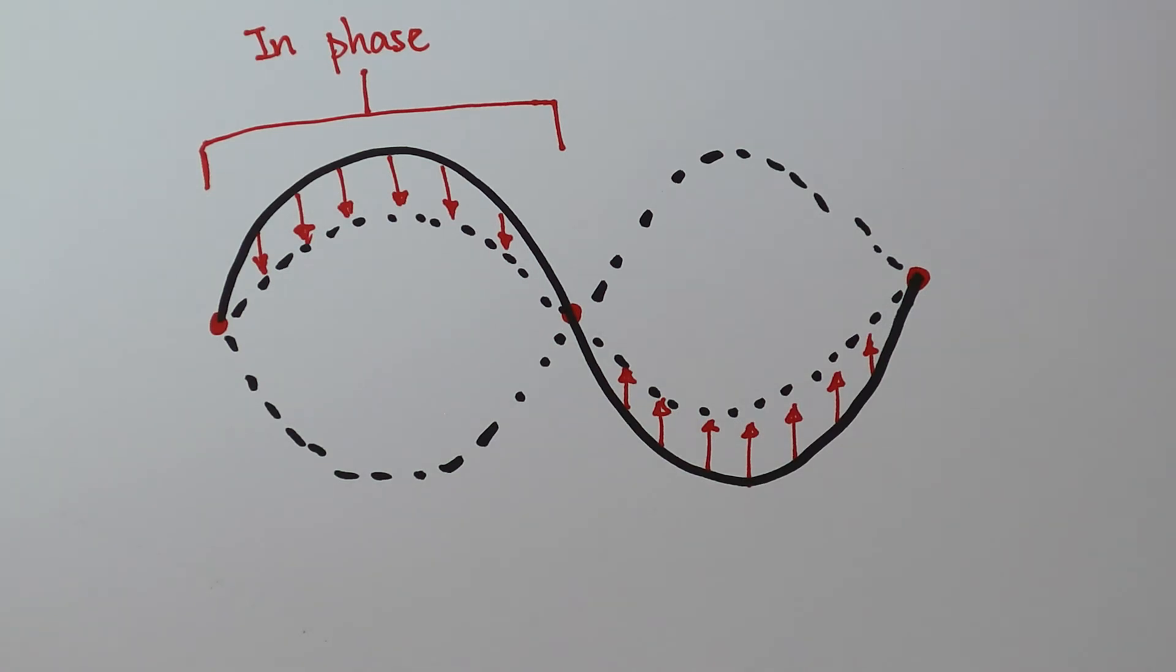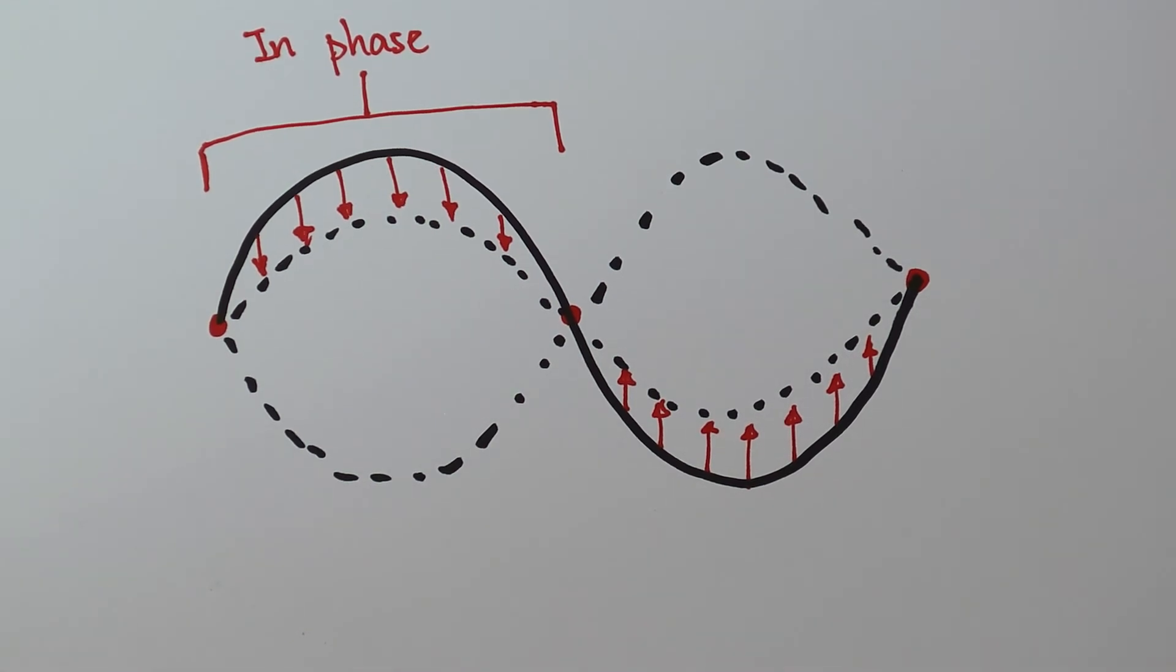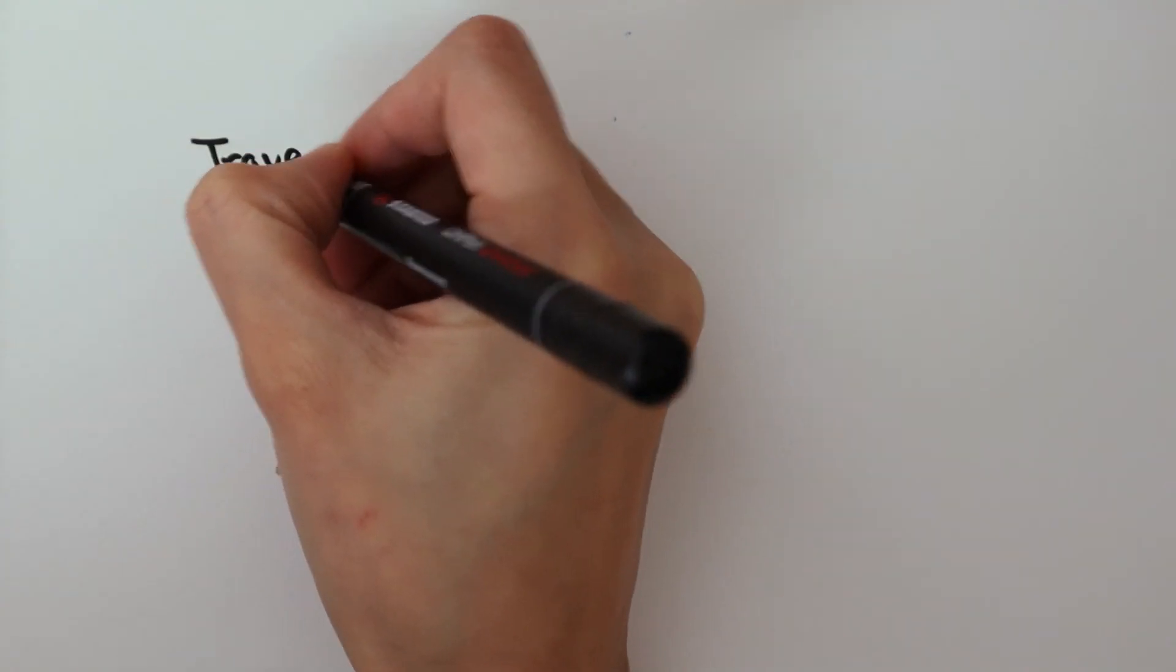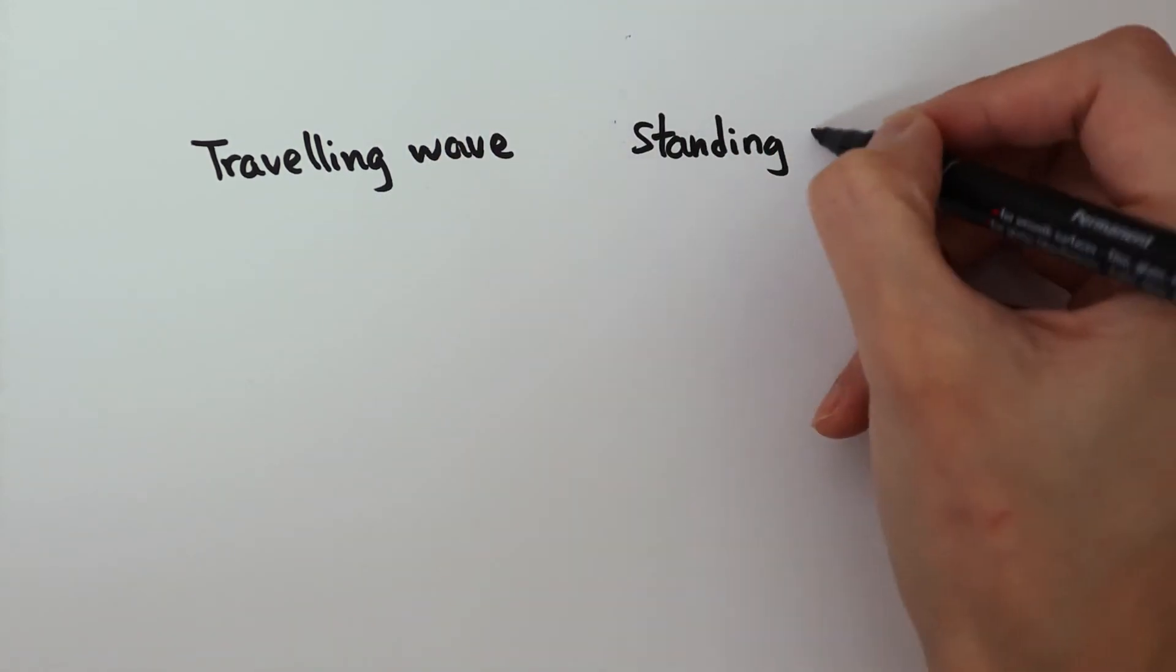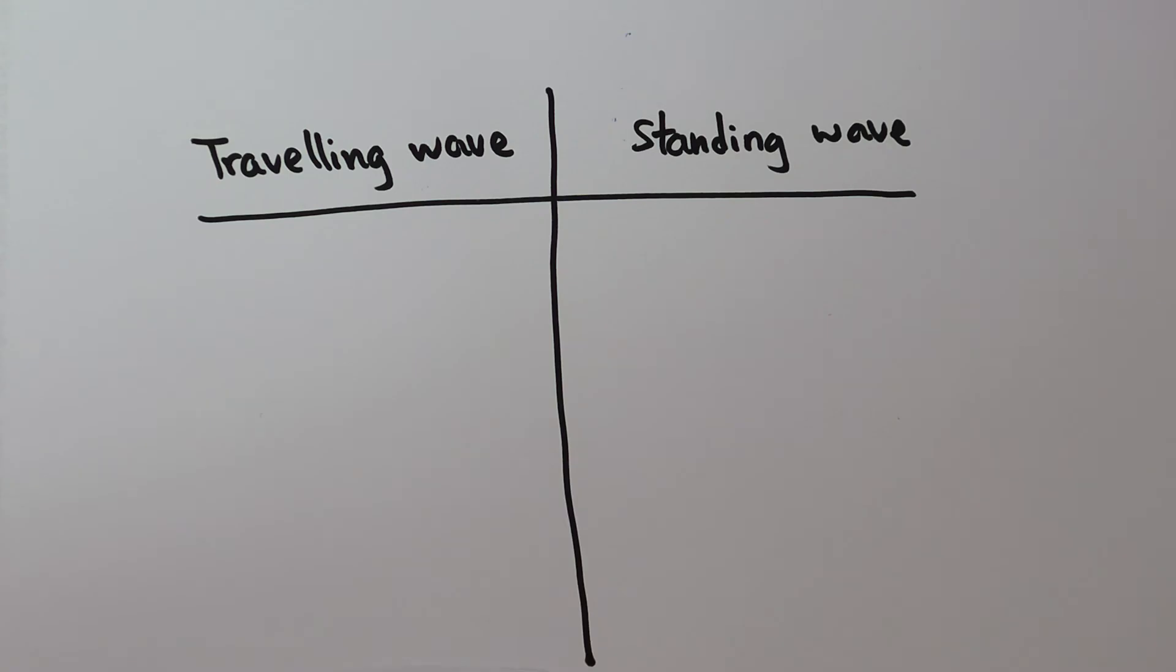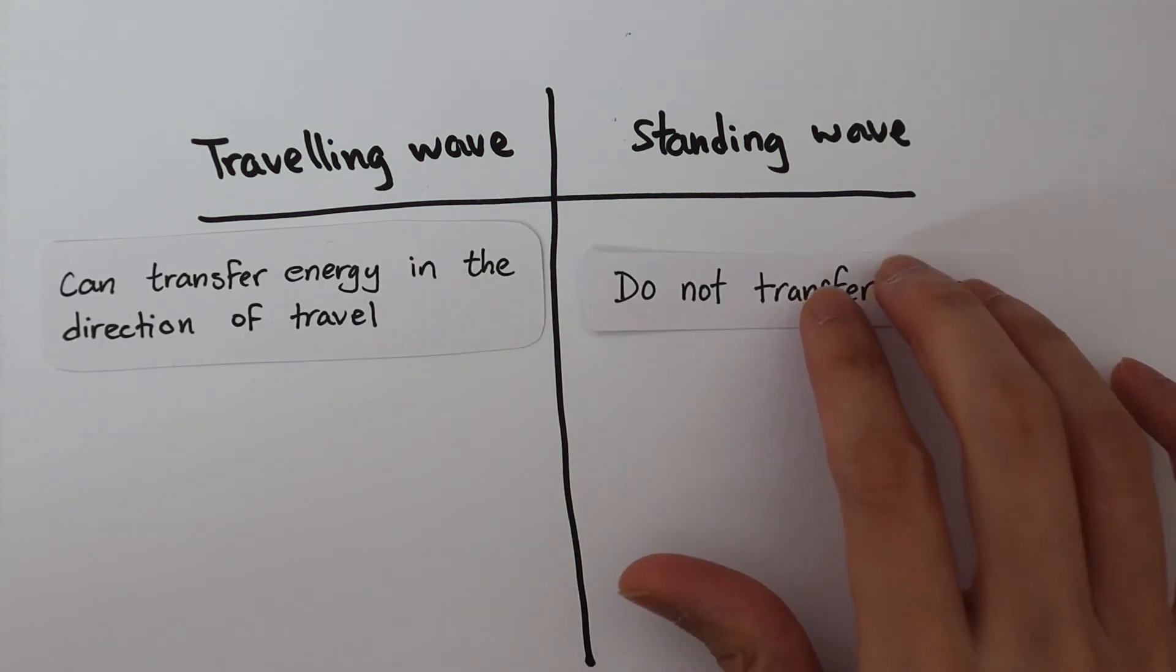Generally speaking, particles between two adjacent nodes in a standing wave are in phase with each other. Here's a summary of the differences between a traveling wave and a standing wave. Traveling waves can transfer energy, but a standing wave can't do that.